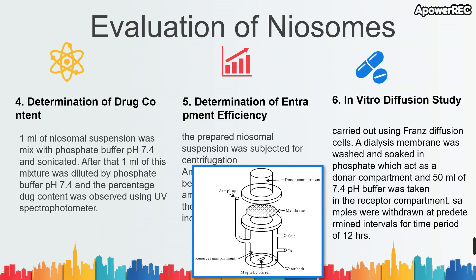Finally, in vitro diffusion study was performed using a Franz diffusion cell. A dialysis membrane soaked in buffer solution acted as the donor compartment, and 50 ml of pH 7.4 buffer acted as the receptor compartment. The system was kept at 37 degrees Celsius with continuous stirring, and samples were withdrawn at predetermined intervals and replaced with fresh medium over a period of 12 hours.